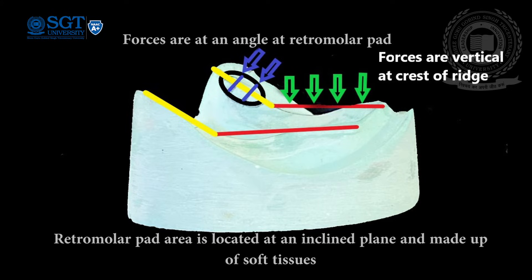No artificial teeth should be arranged over the retromolar pad area, as it is placed at an angle or inclined plane and is primarily made up of soft tissue which will displace the denture during function. When we place the central fossa of artificial teeth on the midline, it places them on the center of the ridge, so all the masticatory forces are directed vertically onto the center of the ridge, and the teeth are placed in a neutral zone.